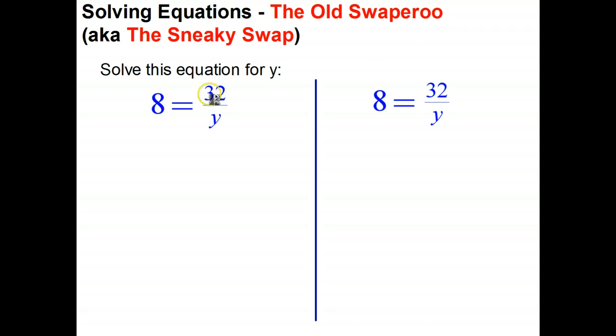Okay so let's have a look at this equation just here: 8 equals 32 over y. Now, if you're pretty good at arithmetic you probably say y is 4 because 32 divided by 4 is 8, but let's say you didn't know that and you were going to use algebra to solve for it. Now the difficulty with this question of course is the fact that your unknown is in the denominator of a fraction.